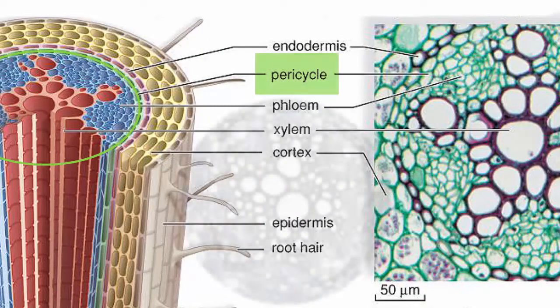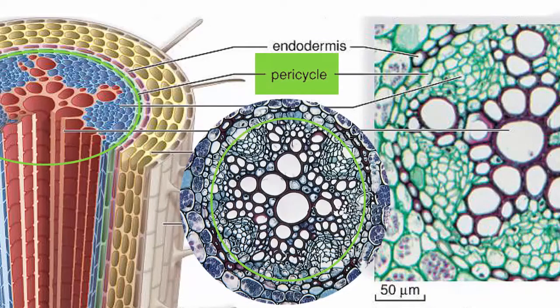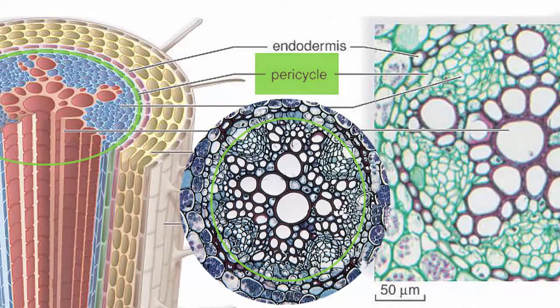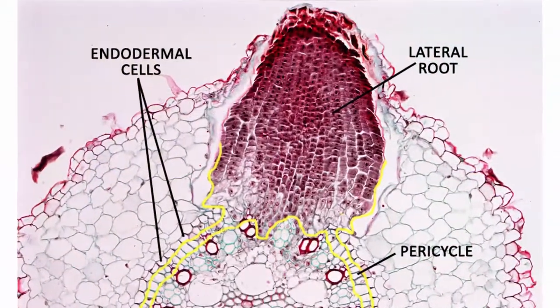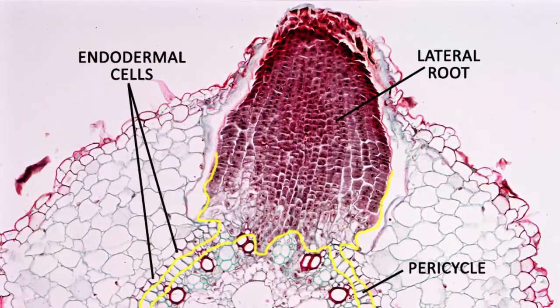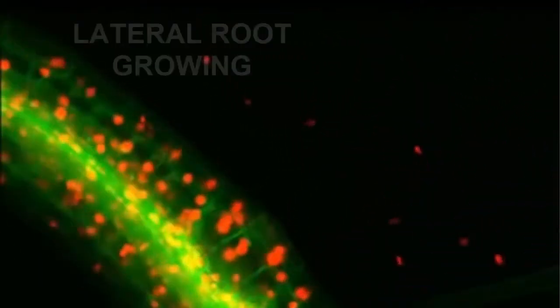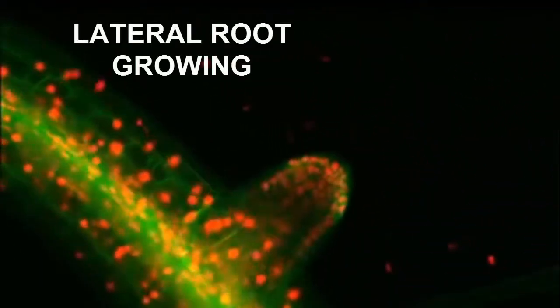This is called the pericycle and its cells can divide to form lateral roots or otherwise known as branch roots. They are like smaller roots originating from a larger root but don't mistake them for root hairs which are again just extensions of the cell membranes and not really made up of individual cells.